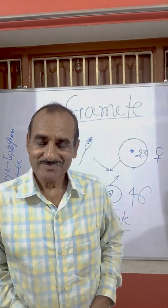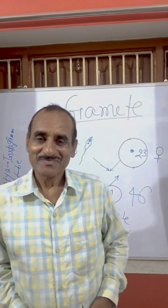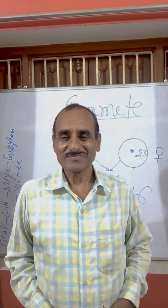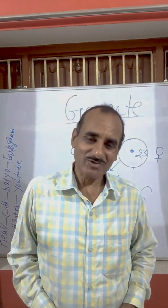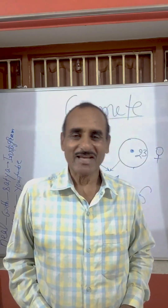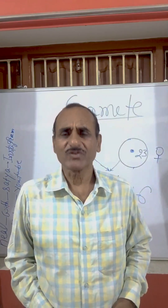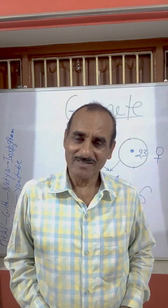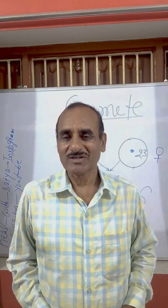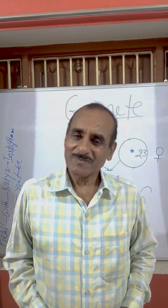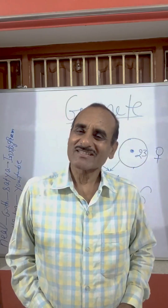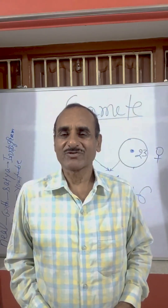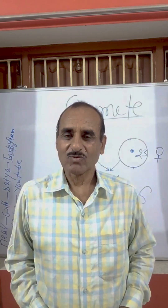A gamete is a reproductive cell which contains a haploid number of chromosomes. Gametes are of two types: male gametes and female gametes. In the case of humans, the male gamete is called a sperm and the female gamete is called an ovum. A sperm contains only 23 chromosomes and an ovum also contains only 23 chromosomes.